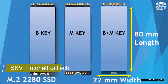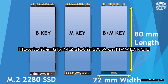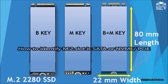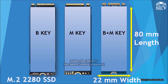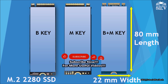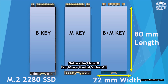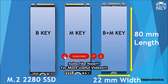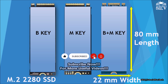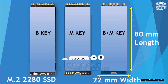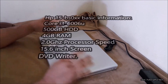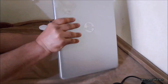Hi everyone, welcome back to my channel SKV Tutorial for Tech. In this video I'm going to show you how to identify if an M.2 slot is SATA or NVMe PCIe SSD. You can identify an M.2 slot as SATA or NVMe PCIe by the notches on the M.2 slot itself or the corresponding M.2 SSD. Always refer to your motherboard's manual for definitive information since physical keys can vary. That is what we are going to do, so watch the video and subscribe to the channel.